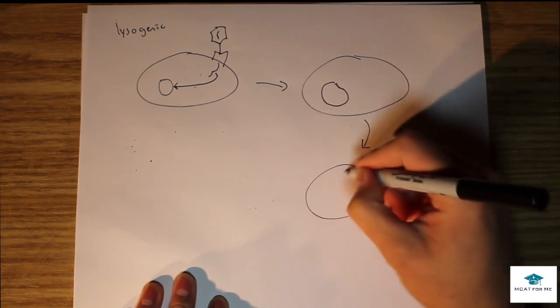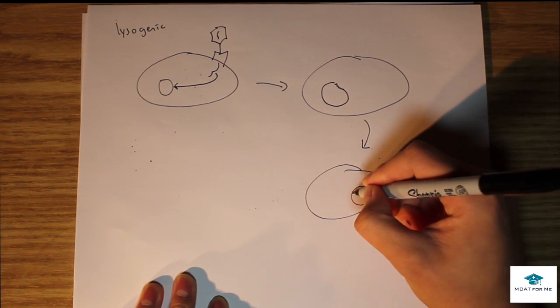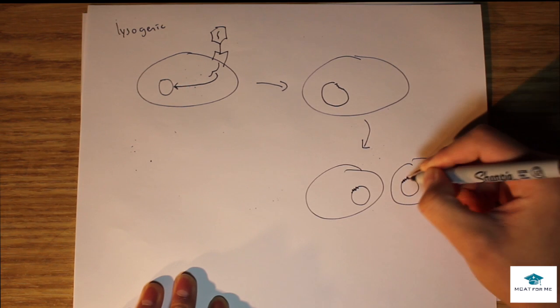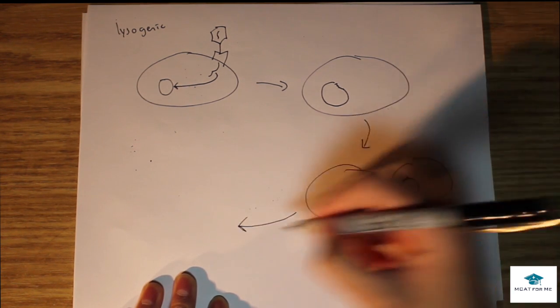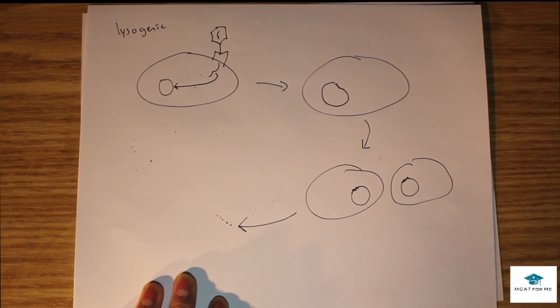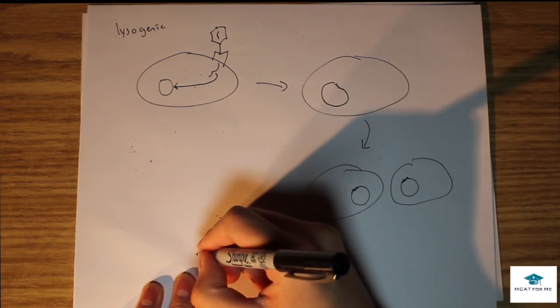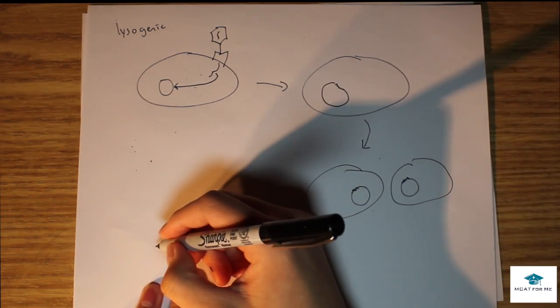Now these cells are just going to replicate like normal. After mitosis we're going to have these two little cells right here with the two little viral genomes within there. They're just going to keep replicating on and on and on. But the thing is eventually this may be somewhat rare but it can go into the lytic life cycle.